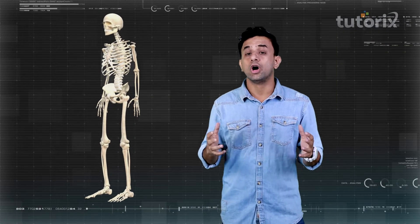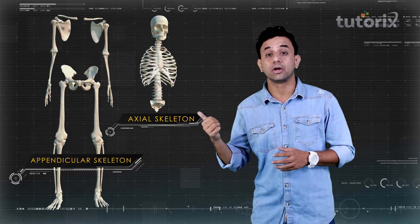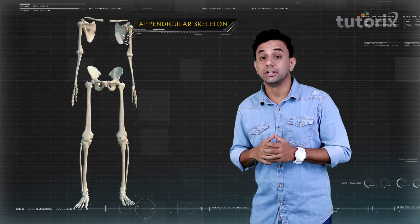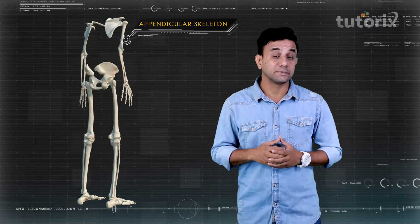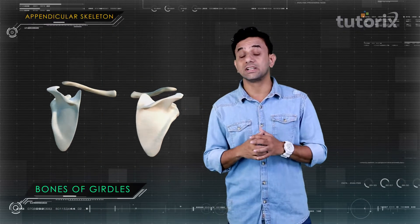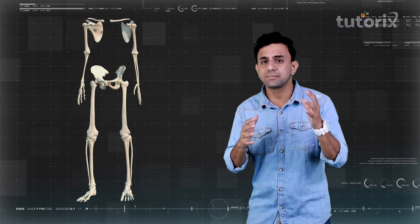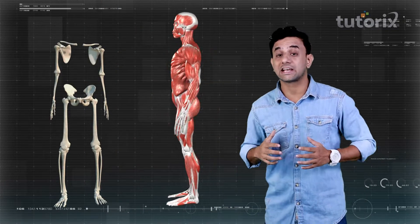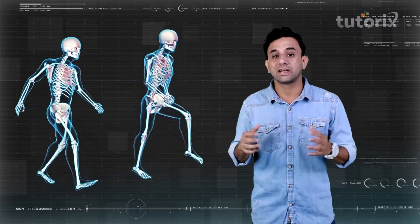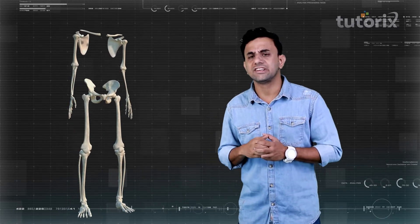The body's skeletal system is made up of two major parts: the axial skeleton and the appendicular skeleton. The axial skeleton forms the main axis of the body and supports it. The appendicular skeleton consists of bones making up the upper and lower limbs and the two girdles, and it plays a very major role in movement, enabling activities like walking, running, and dancing.